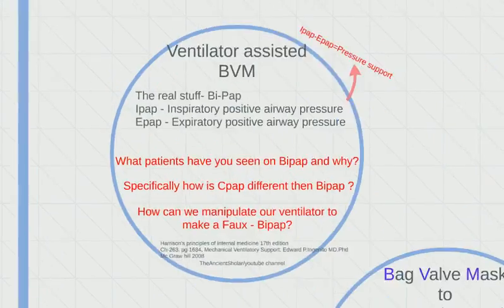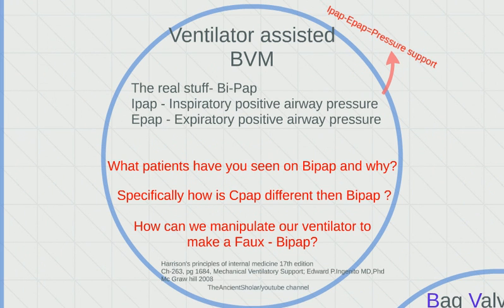We have four categories we're going over. The first one is ventilator-assisted BVM. Before we get into that, I want you to answer a question highlighted in red: what patients have you seen on BiPAP and why? What patients have you brought into the ER where they ordered respiratory and said we need to put this patient on BiPAP? One of the ones that really comes to mind is asthmatic patients. Asthmatic patients in the hospital are always put on BiPAP and not CPAP — why is that?